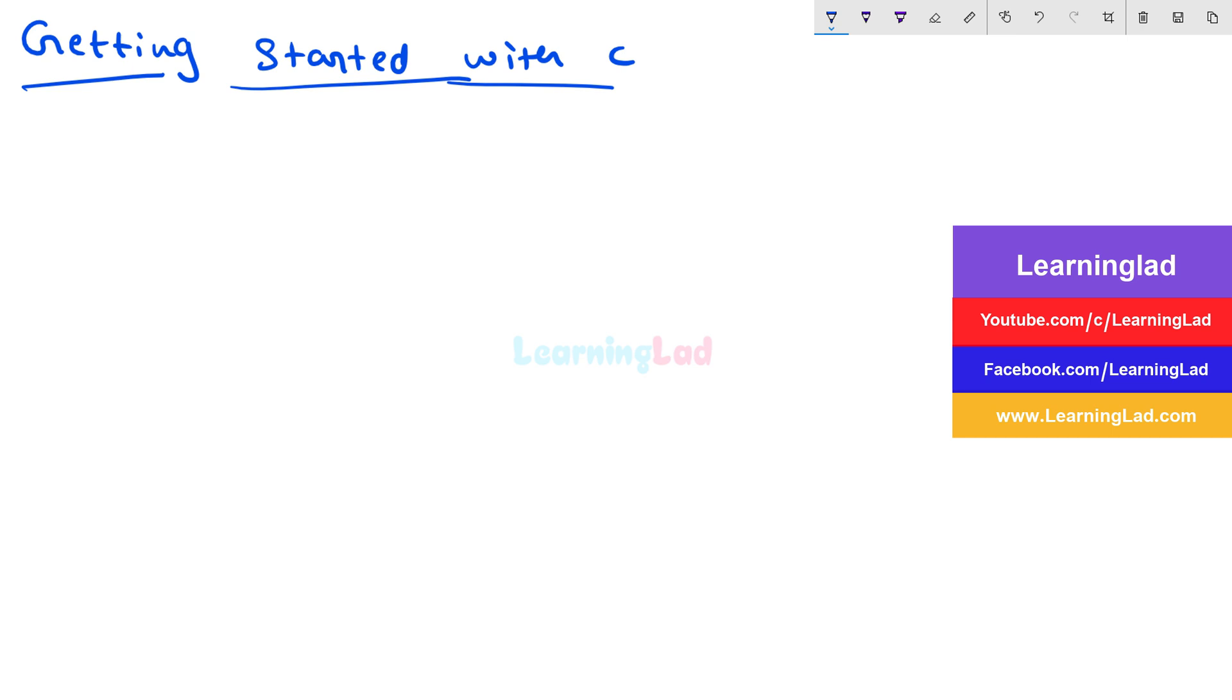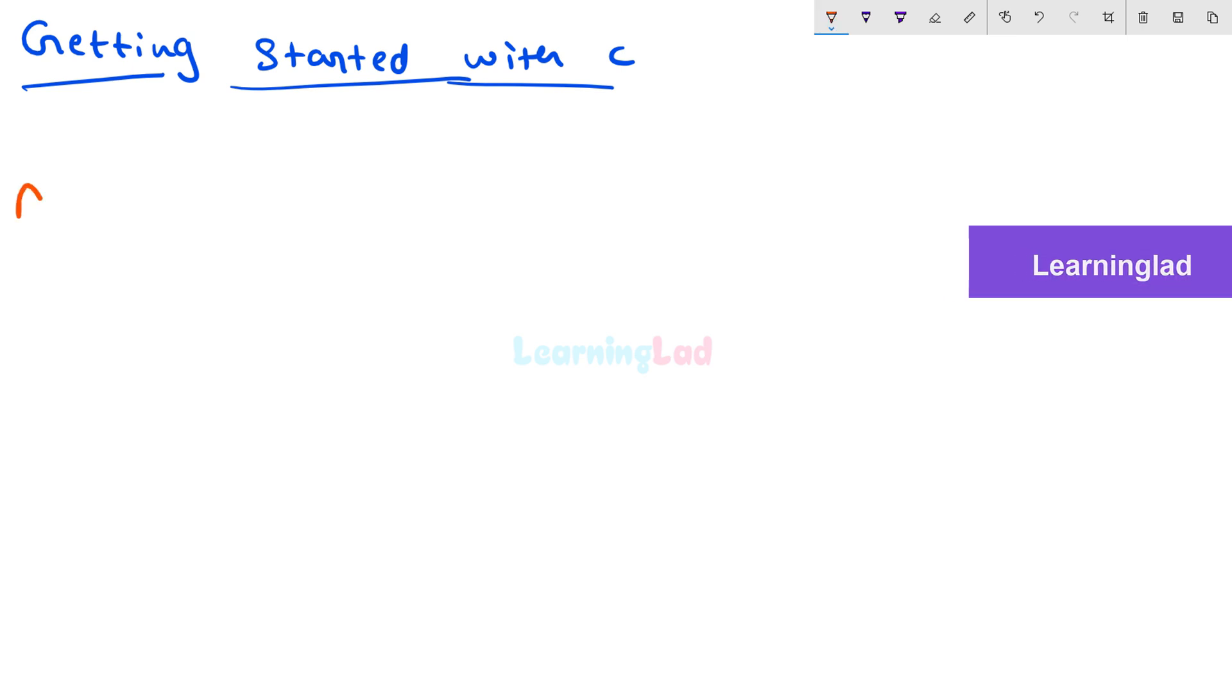Learning C language will be like learning any other language that you speak. For example, it is like learning English. If you have to learn English, then first you will learn the English alphabets, and then you learn some words in the English language, and then you will learn to create the sentences. But in order to create the sentences from words, you need to know the English grammar.